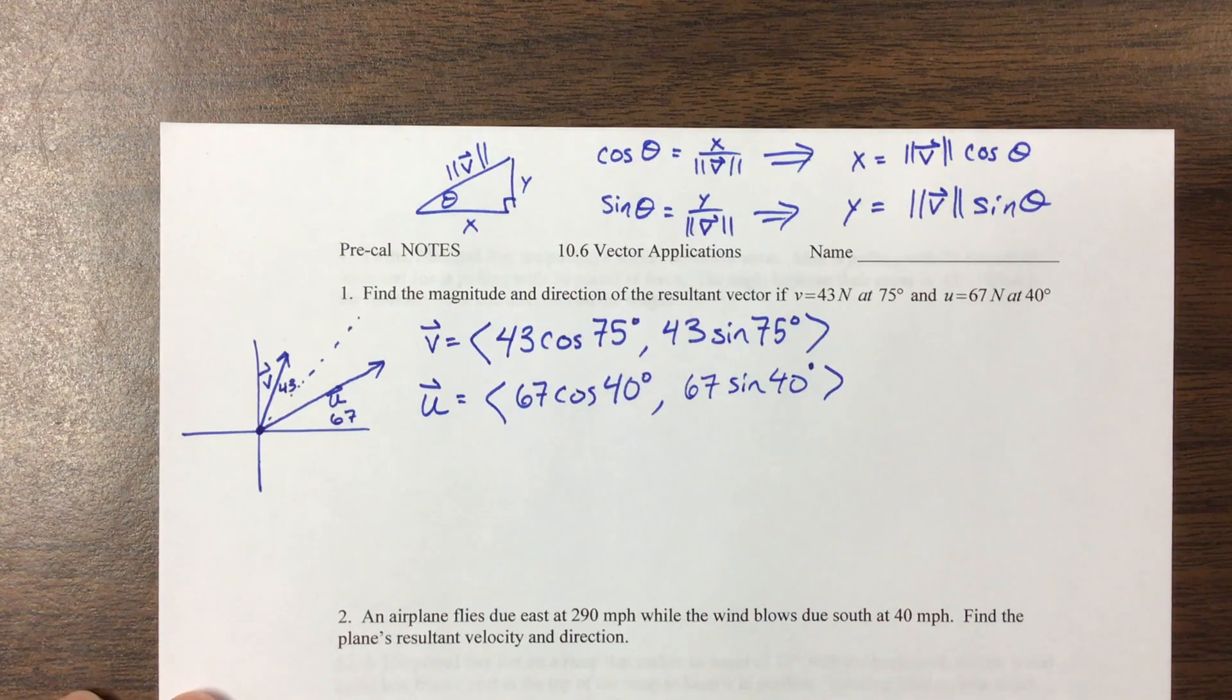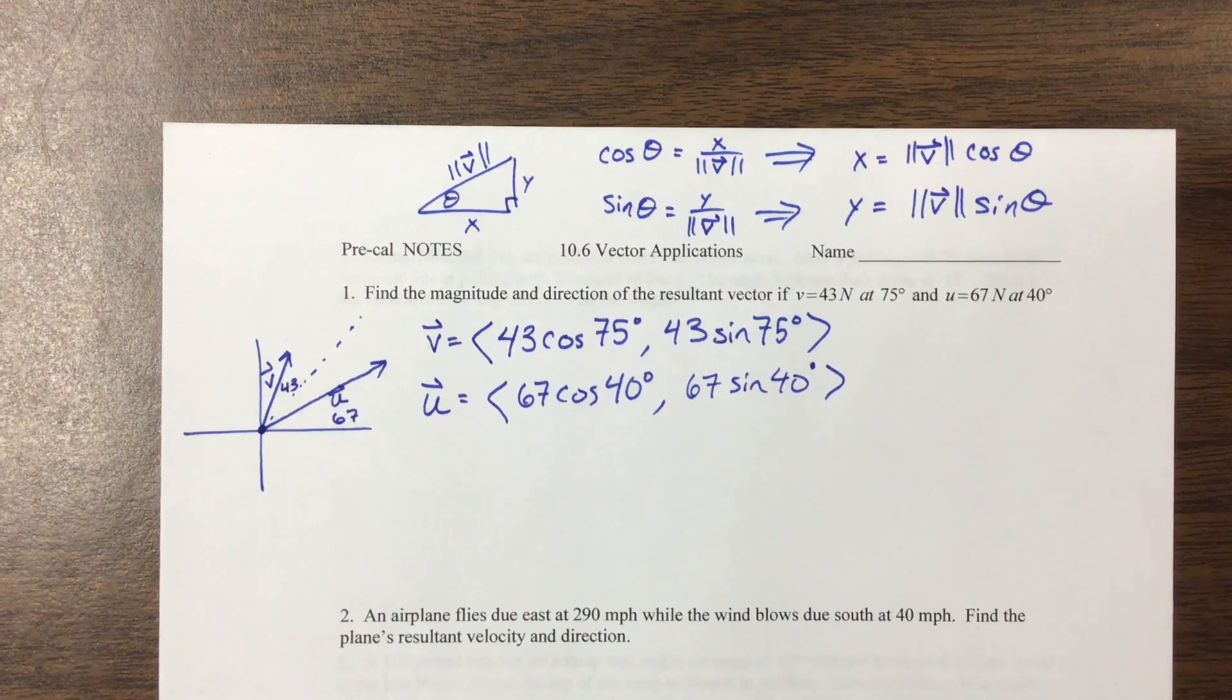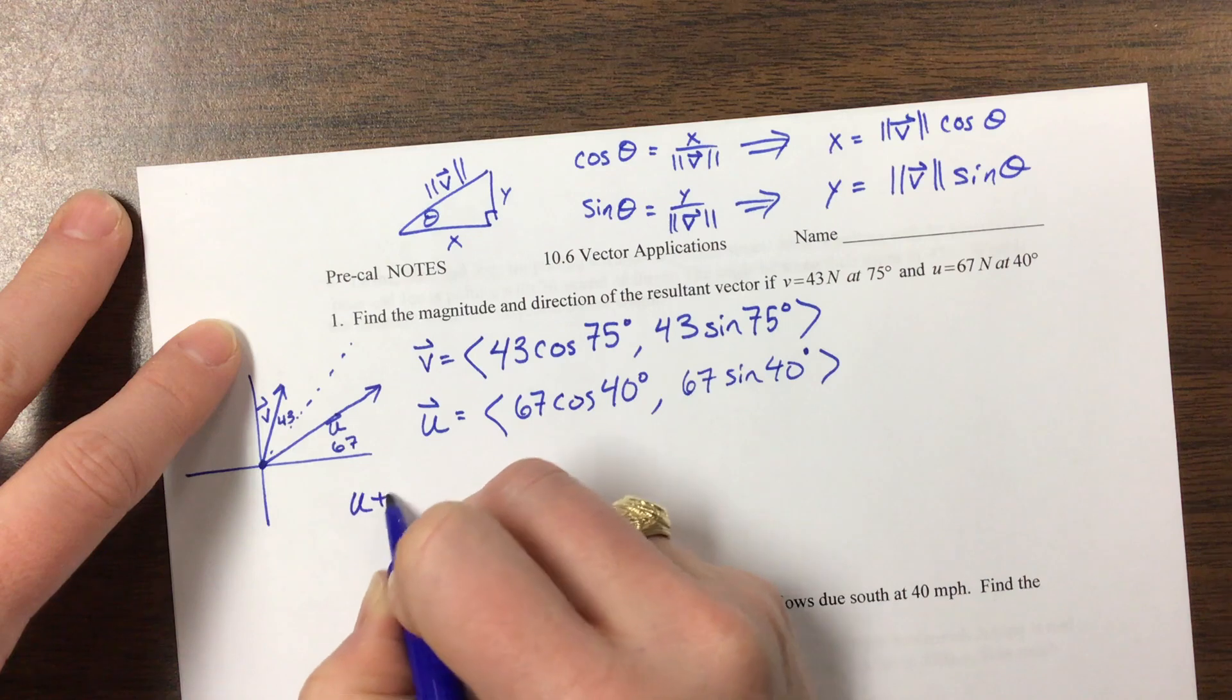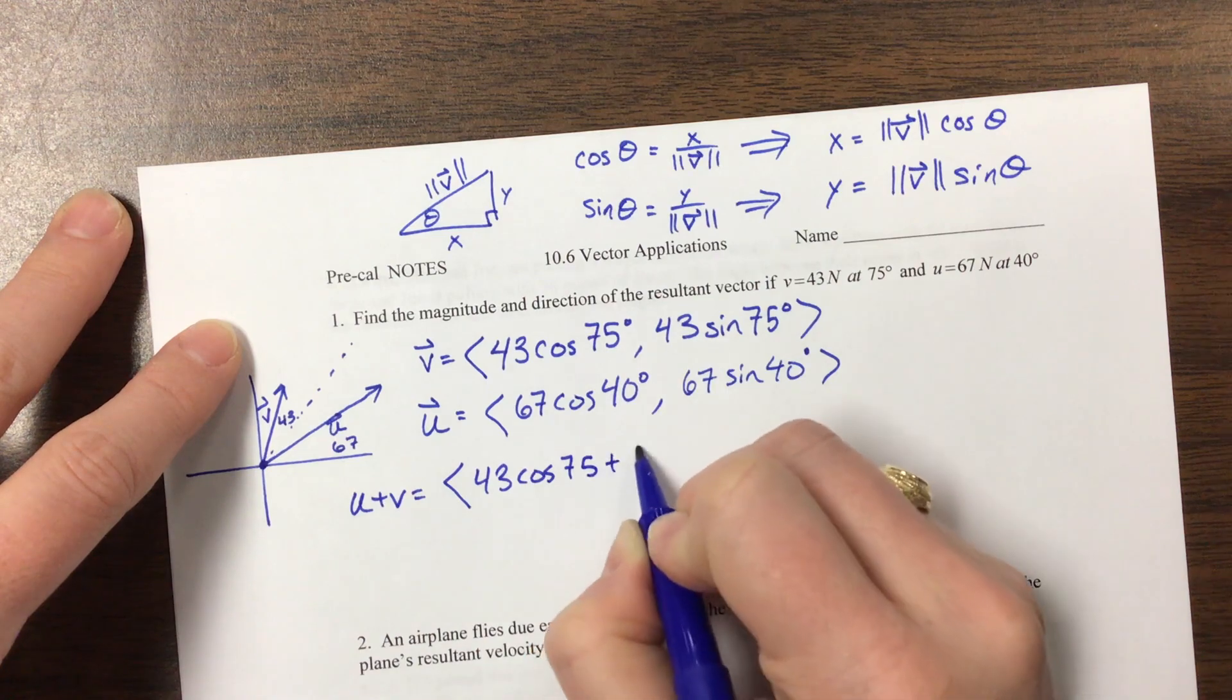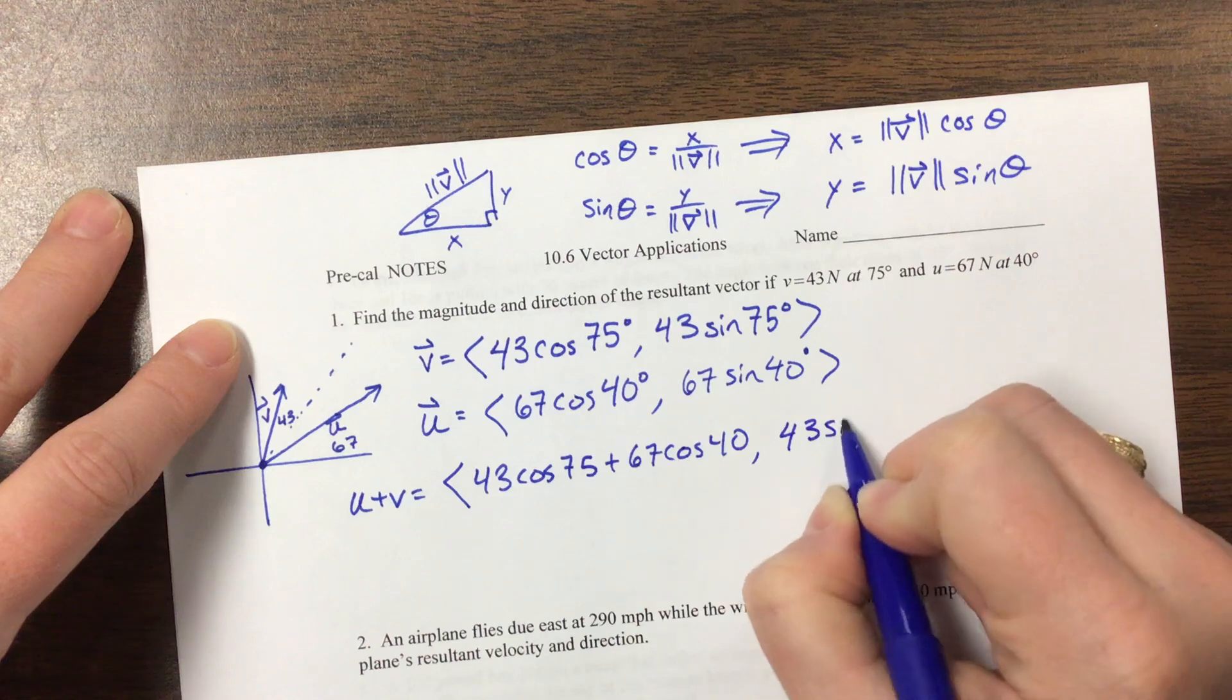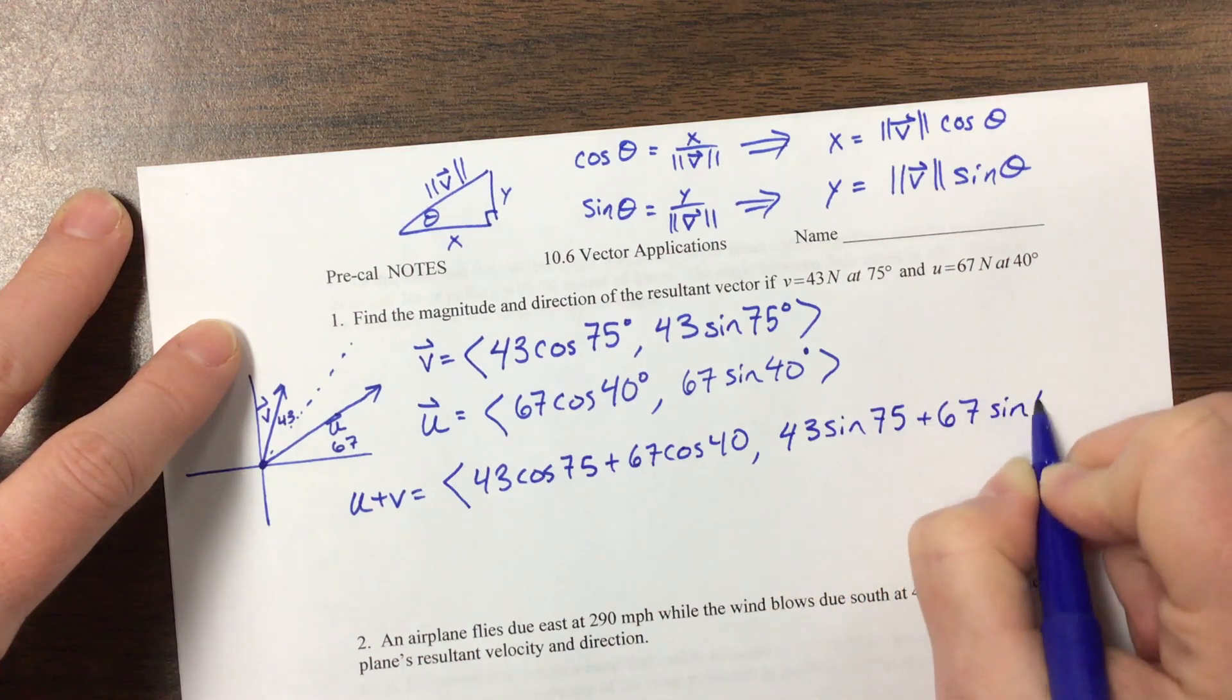The more work you show me, the more partial credit I can give you if you're wrong, and the more I know that you did it and not your neighbor. So U plus V would be equal to 43 cosine of 75 plus 67 cosine of 40 for the X value. The Y value is 43 sine of 75 plus 67 sine of 40.